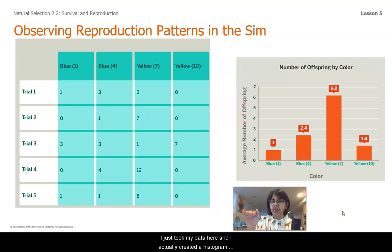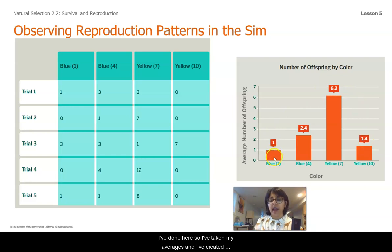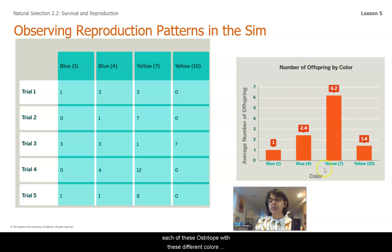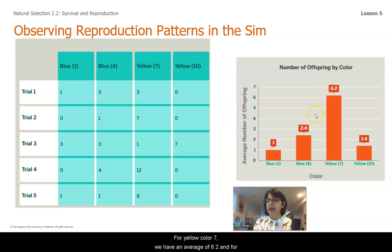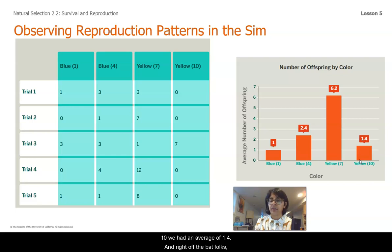I took my data and created a histogram out of it to make it a little bit more concise. I've taken my averages and created a histogram to show the average number of times each of these Australopes with these different colors reproduced, and thus the average number of offspring that they had as well. For blue color level 1, we had 1. For blue color level 4, we had an average of 2.4. For yellow color 7, we have an average of 6.2. And for Australopes with a yellow color level of 10, we had an average of 1.4.